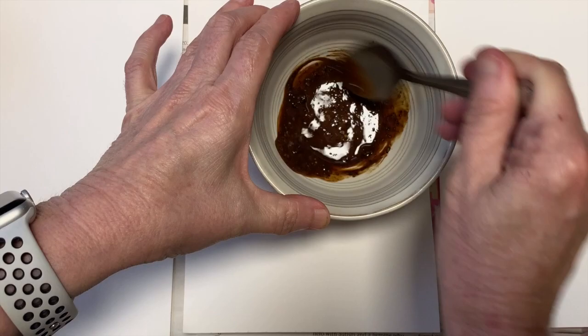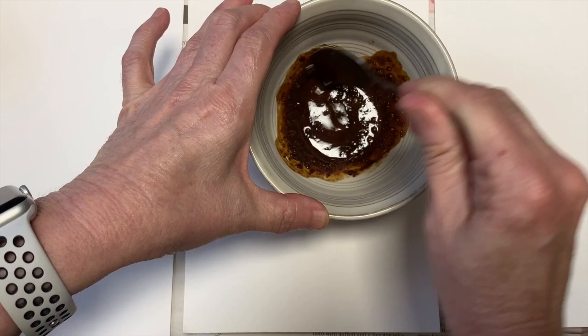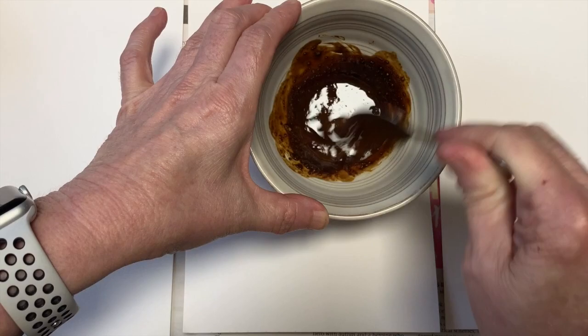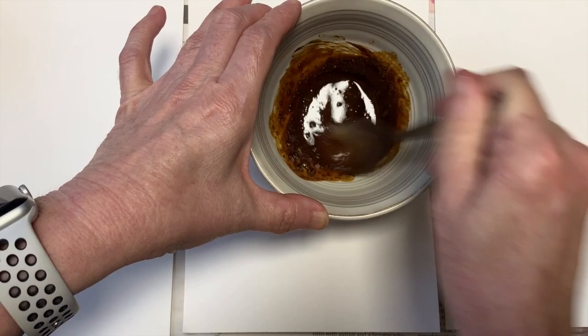That was probably about a teaspoon and a half. Just give it a good mix and let all those little granules dissolve. Otherwise you're going to have funny little blotchy granules on your painting.